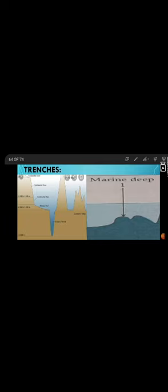So students, we have seen the submerged landforms: continental shelf, continental slope, abyssal plains, mountain ranges and plateaus, and marine deeps and marine trenches. In the next session, we are going to see about marine deposition and how it takes place below the ocean floor. Till then, bye bye.